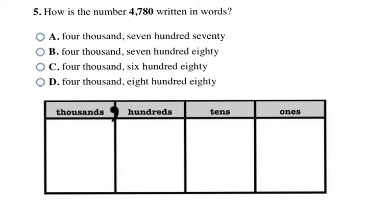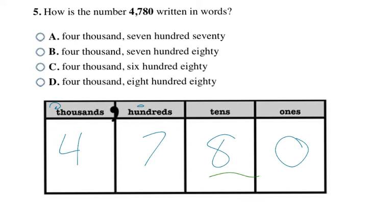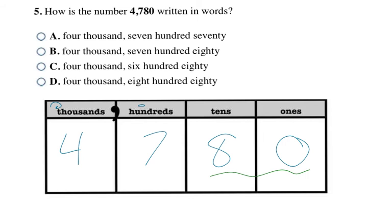This question asks how the number 4,780 is written in words. I'll fill it into my chart to help. The thousands and hundreds numbers are always read with the place value, and then the last two digits you group together and say normally. So that means this one is four thousand, seven hundred, eighty. The answer that says four thousand, seven hundred, eighty is choice B — your final answer.